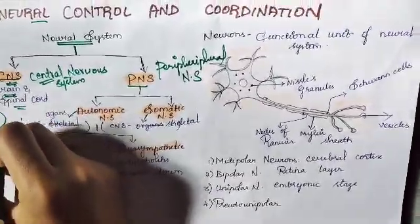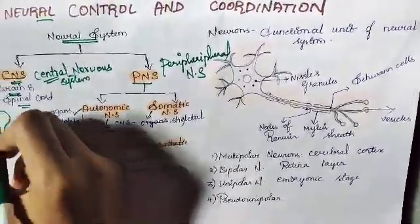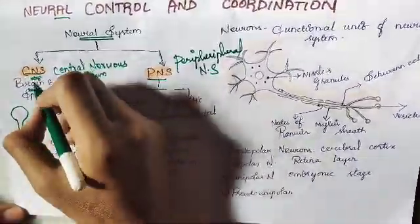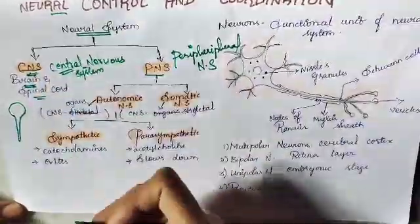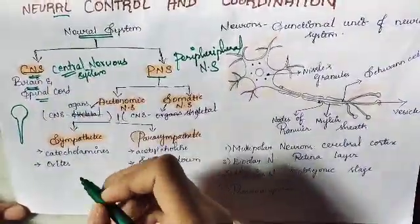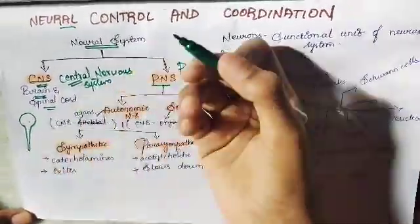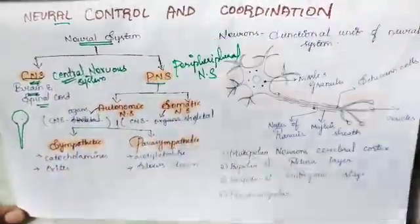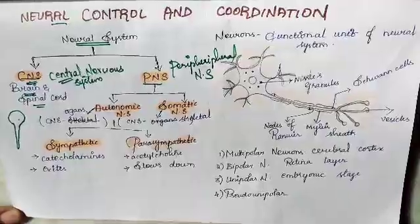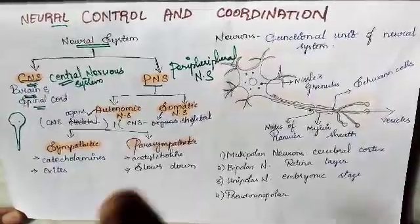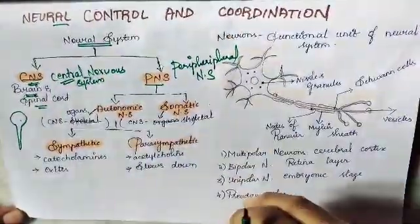From the name itself we can identify them. Central means the central part of our neural system where the main activities are performed. Peripheral means they are mostly present at the edges of our body — that means the nerves. The central nervous system comprises the brain and the spinal cord. The peripheral nervous system spreads all over the body.